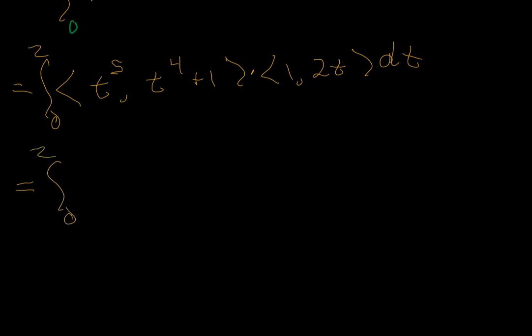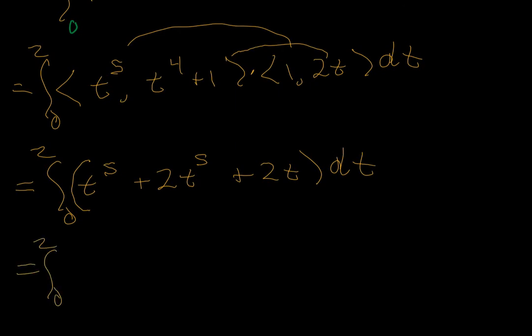0 to 2, that's going to be t⁵, and this times this is going to be 2t⁵ plus 2t. I see some like terms, so let's just go ahead and capitalize on that. 3t⁵ plus 2t.